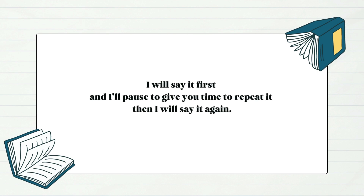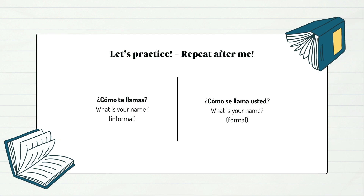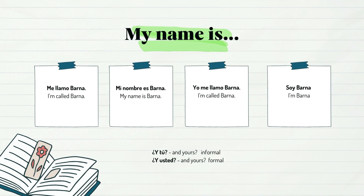I will say it first, and I'll pause to give you time to repeat it, then I will say it again. Let's practice — repeat after me: ¿Cómo te llamas? ¿Cómo se llama usted? Me llamo Barna. Mi nombre es Barna. Yo me llamo Barna. Soy Barna.